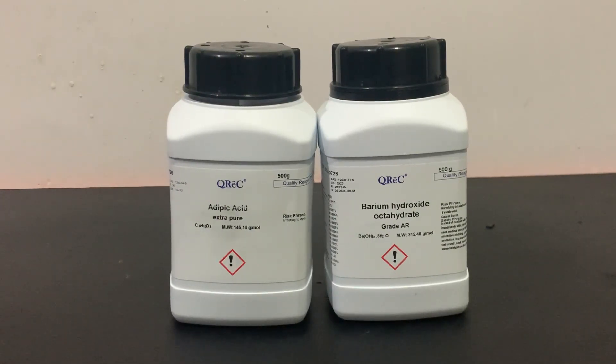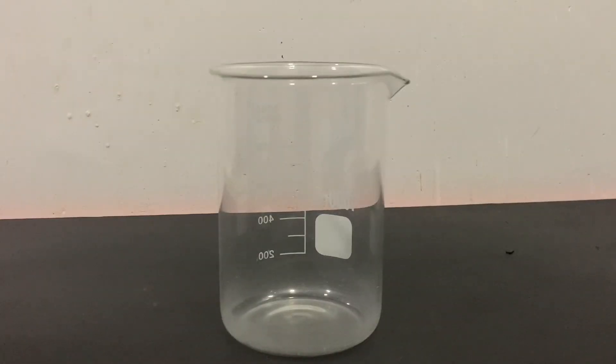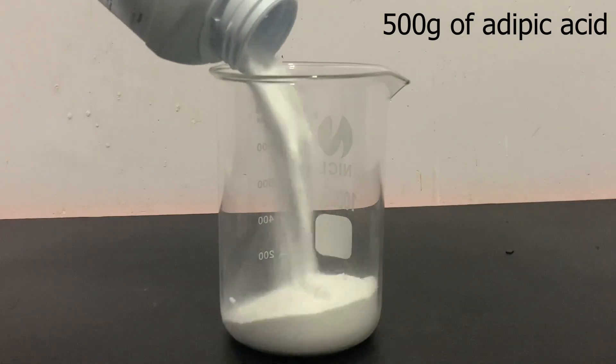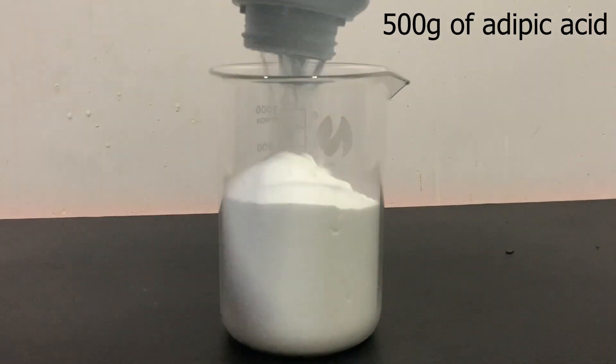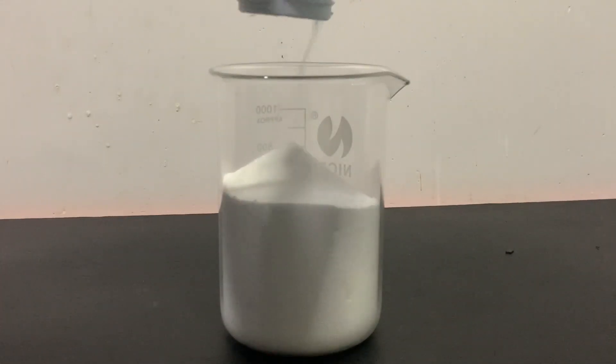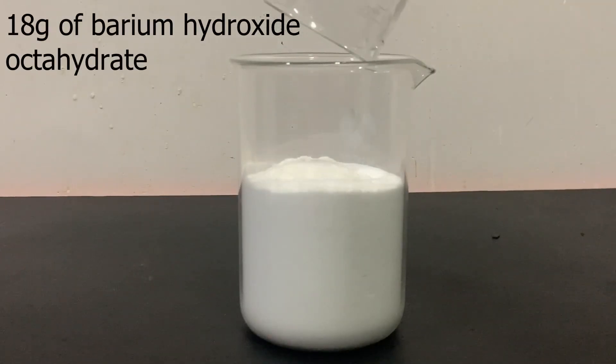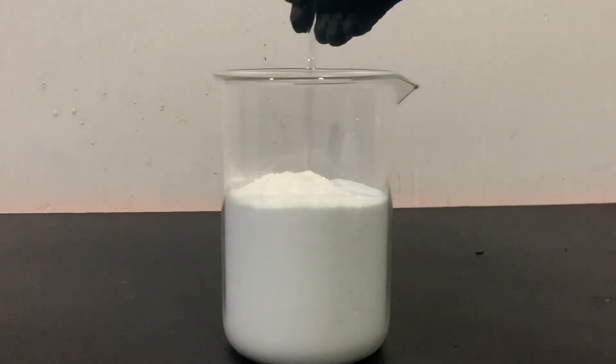For the synthesis, I'm going to use 500g of adipic acid along with 18g of barium hydroxide. Both of these powders are transferred to a large beaker. They are then mixed together.